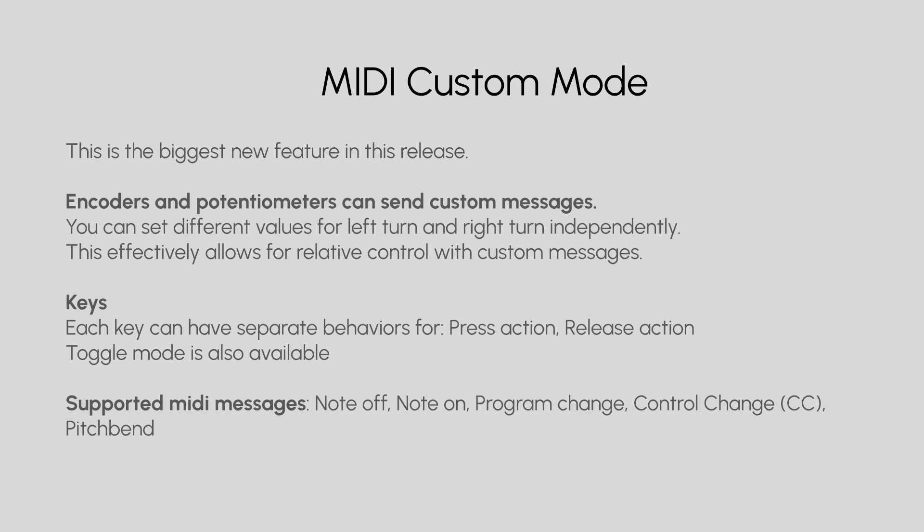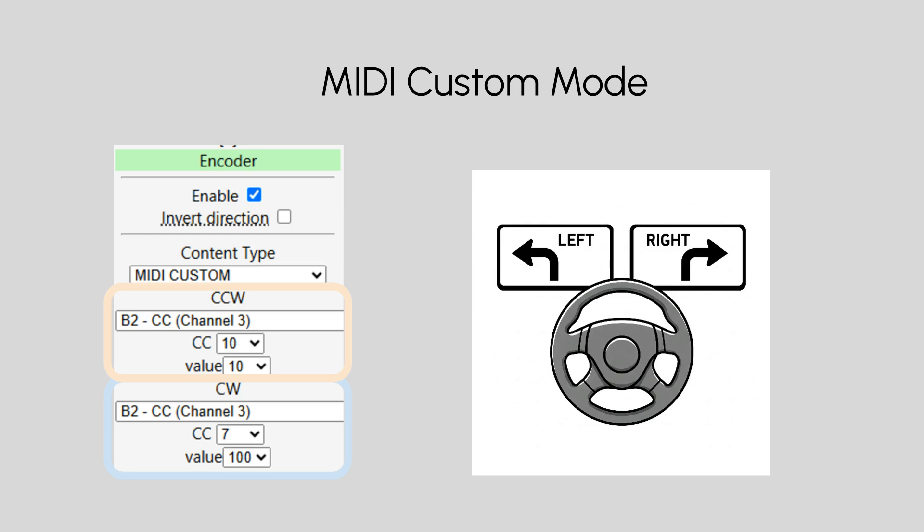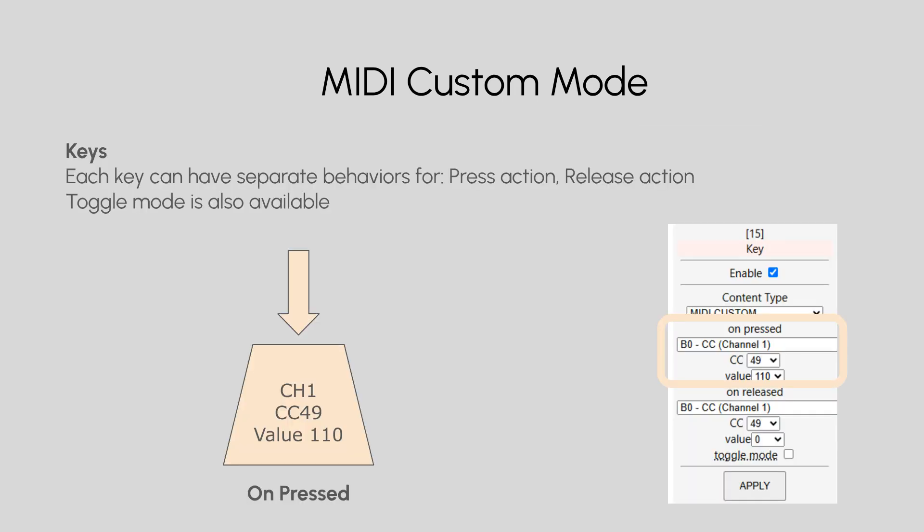MIDI Custom Mode. This is the biggest new feature in this release. Encoders and potentiometers can now send custom MIDI messages. You can assign different values for left turn and right turn independently. This enables relative control with fully customizable messages, offering greater flexibility in how encoders and potentiometers behave. Each key can now have separate behaviors for press action and release action, with Toggle Mode allowing the key to switch states instead of acting momentarily.